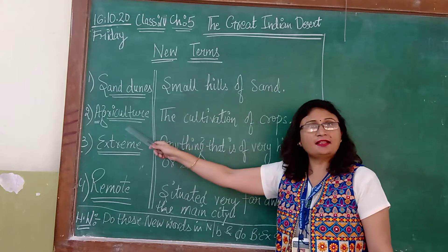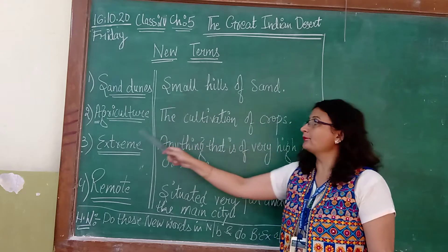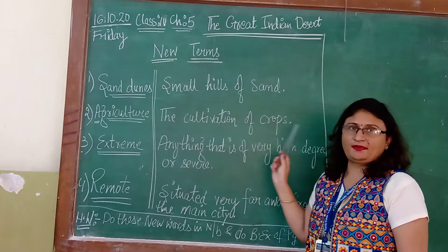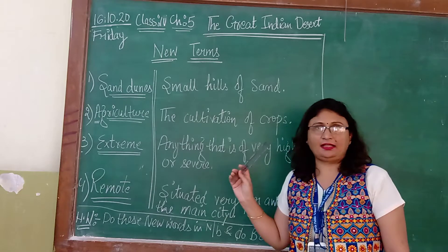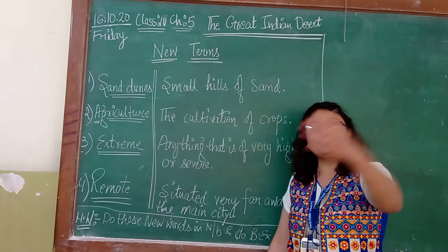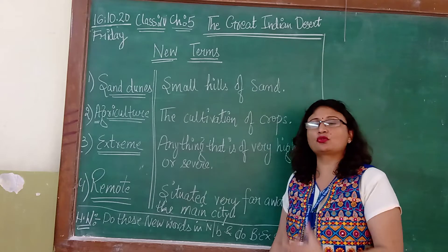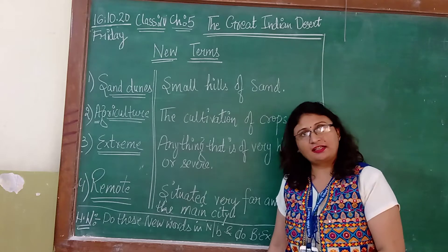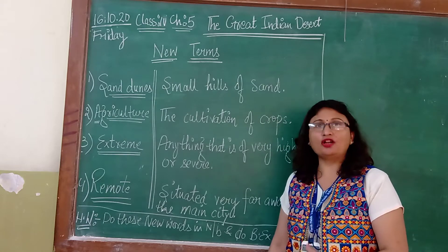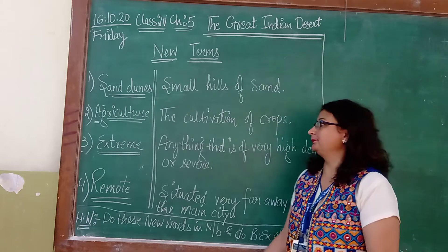The second term is agriculture. Agriculture is the cultivation of crops on a large scale. When we see a lot of crops growing in the land, it is called agriculture, which can feed a large number of people.